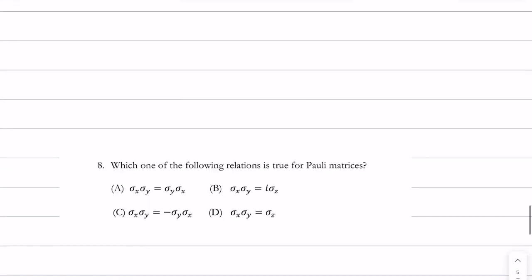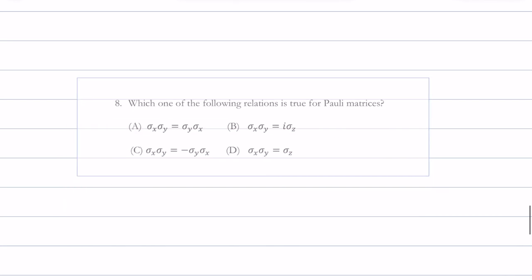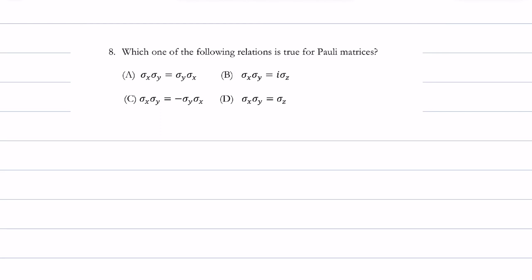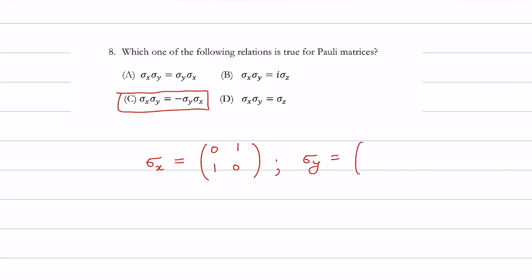Problem 8 asks which relation is true for Pauli matrices. The Pauli matrices anti-commute — they don't commute — so the correct option is C. To verify: σₓ = [[0,1],[1,0]], σᵧ = [[0,−i],[i,0]], and σ_z = [[1,0],[0,−1]].